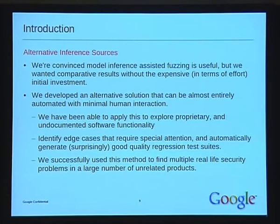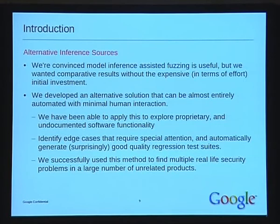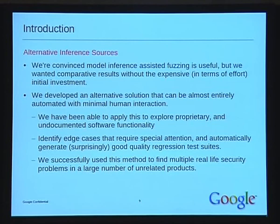I've been convinced that model inference-assisted fuzzing is useful, but it's still really expensive to set up — you still have to put a lot of effort into defining specifications and how it should interact with the software you're trying to fuzz. So I've been working on an alternative solution that replicates the same kind of success of model inference-assisted fuzzing but without this overhead. I've been using this to explore proprietary software, undocumented features, and interesting parts of software that perhaps haven't been touched by fuzzers before. It's also useful for automatically generating regression test suites that apply generically and find bugs even without looking at the original software.